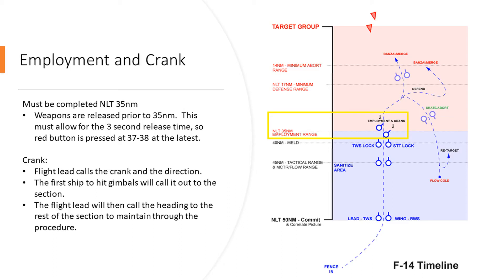Once we hit that 35 nautical mile mark, all weapons need to be released and we need to be in the crank. So you've got really from 40 miles to 35 nautical miles to do that — give or take five seconds. It takes three seconds for the Phoenix to come off the rail, so you really need to start mashing those buttons at 37 to 38 nautical miles.